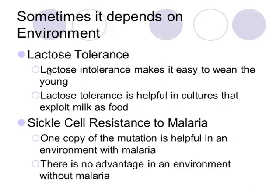Sometimes it depends on the environment. Lactose intolerance could be considered a helpful trait because it makes it easy to wean the young — and women who are nursing have a harder time getting pregnant again, so weaning quickly could help population growth. But it could also be considered a bad trait if milk is one of their main food products. In a society where there isn't a lot of milk, it's great for weaning young quickly. However, in an environment where cow's milk is used as a food product, being lactose tolerant is the helpful trait, because it might help individuals be more likely to get food, survive, reproduce, and pass on that trait.